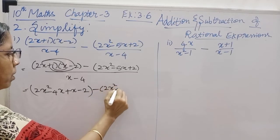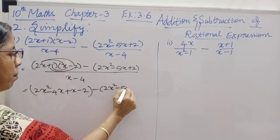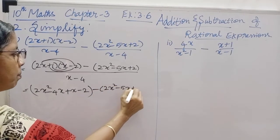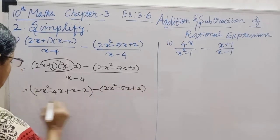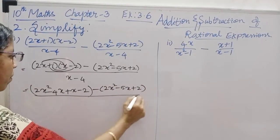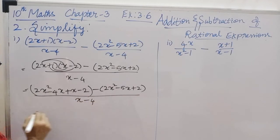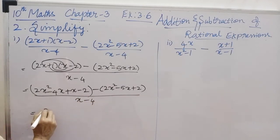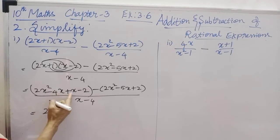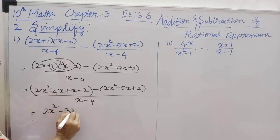Minus of 2x squared minus 5x plus 2, the whole divided by x minus 4. Now, we will get 2x squared minus 4x plus x is minus 3x. Subtract and subtract the number.